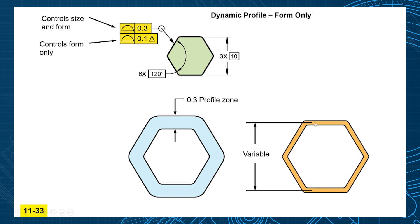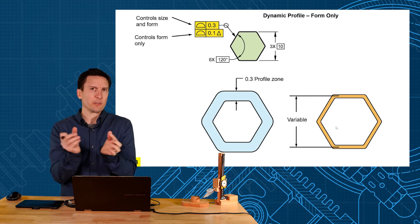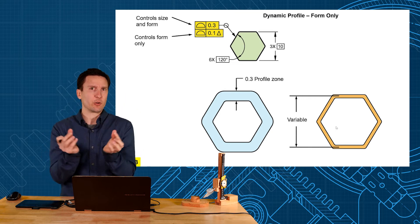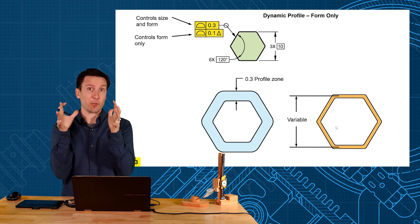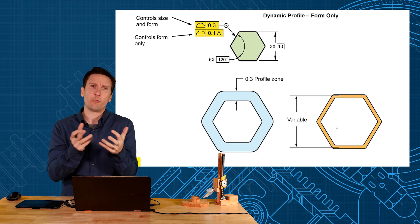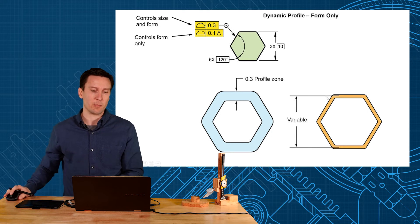So that means this distance between here is variable. So you're unlocking the size requirement of profile. On a closed shape profile tolerance has to be equally distributed around there. So that would control both the size and the form. How do we control form only? That's with this modifier here.